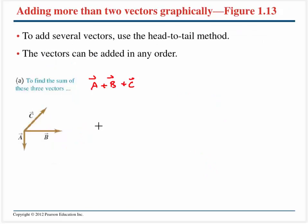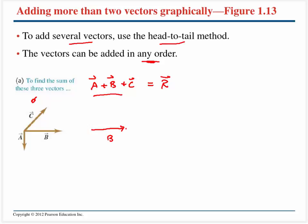We can add many vectors together using the head-to-tail method, and order doesn't matter. Consider three vectors a, b, and c, and we want r = a + b + c. Starting with vector b, then adding vector a, then adding vector c, the resultant vector goes from the tail of the first to the head of the last.